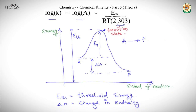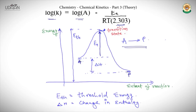Now let's study the energy profile graph. This graph shows the extent of reaction, representing the reactant and the product for the reaction A goes to P. The energy of activation is shown, along with delta H — the change in enthalpy — as the difference between reactant and product energy levels, and the threshold energy.